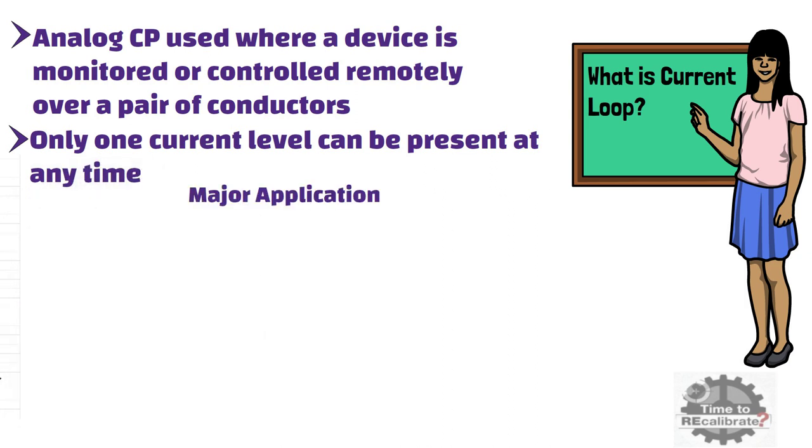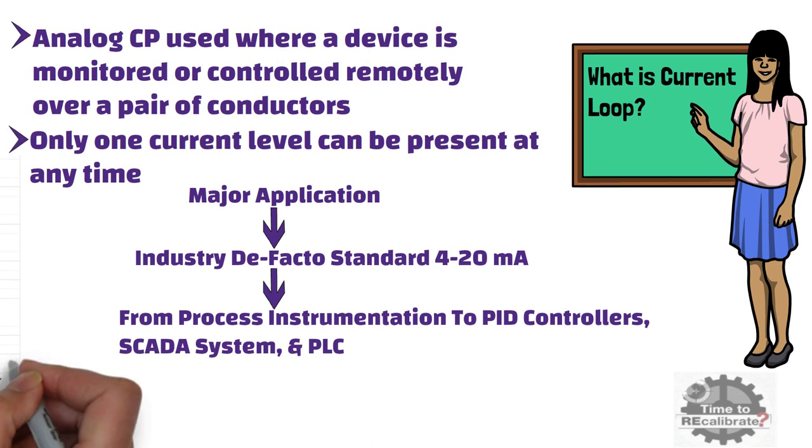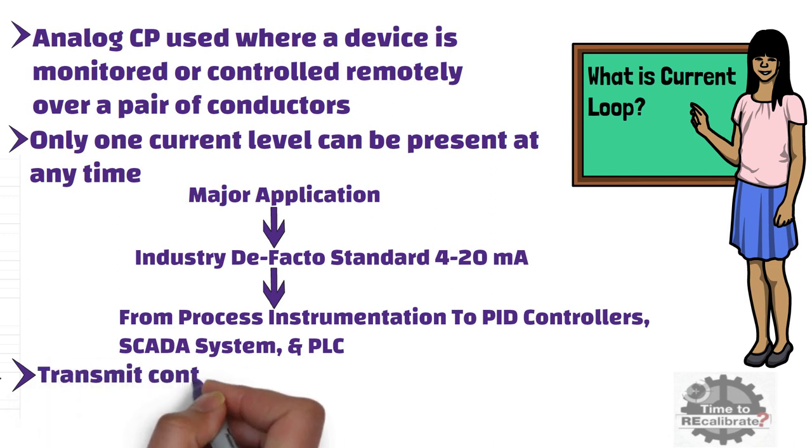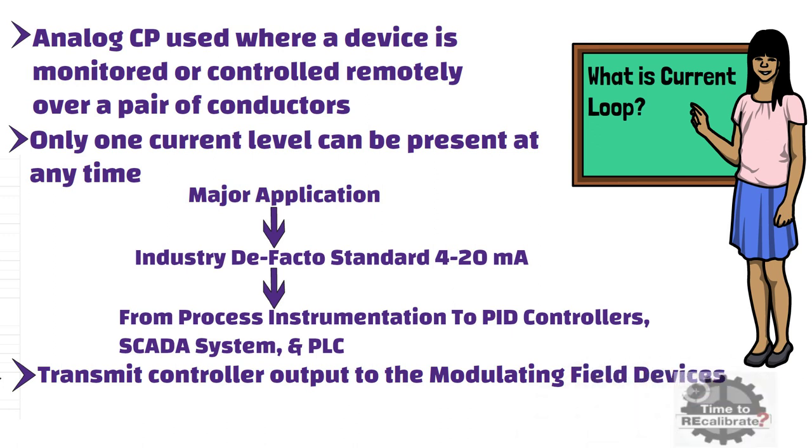A major application of current loop is the industry de facto standard 4-20mA current loop for process control applications, where current loop is extensively used to carry signals from process instrumentation to PID controllers, SCADA systems, and programmable logic controllers. In addition to this, these current loops are also used to transmit controller output to the modulating field devices, such as control valves.